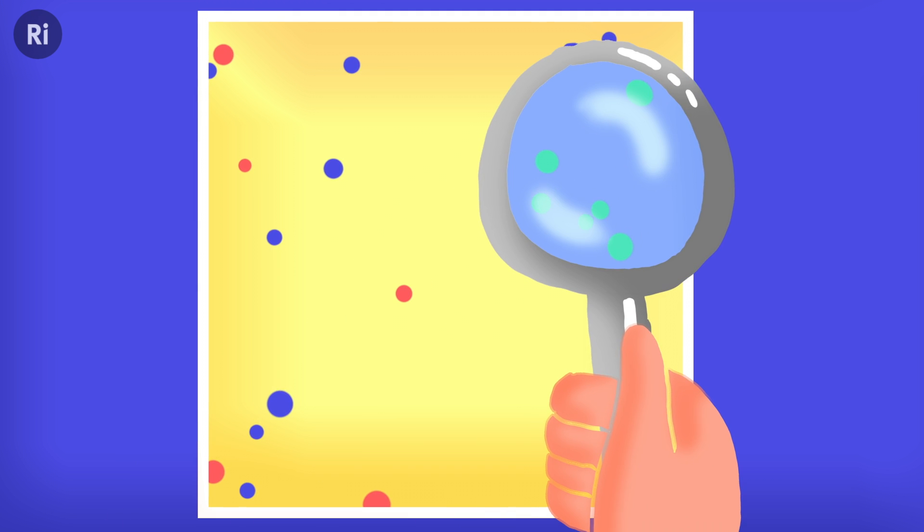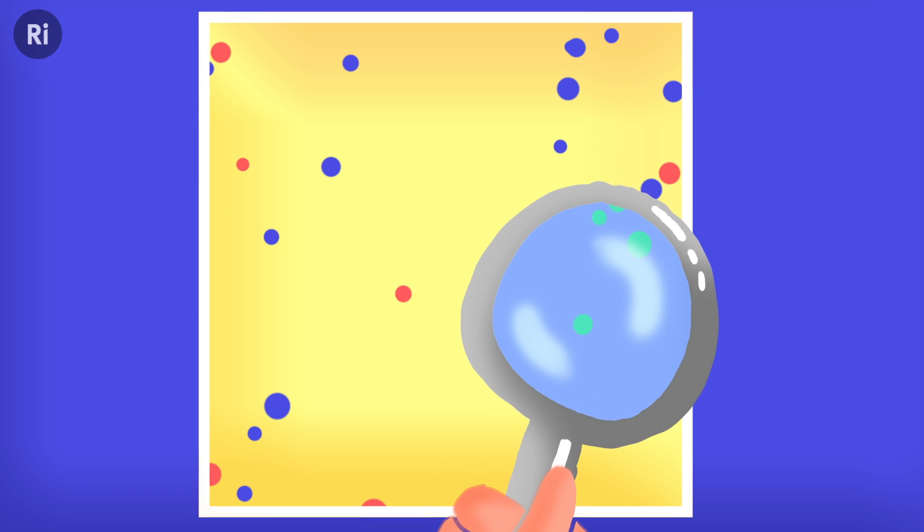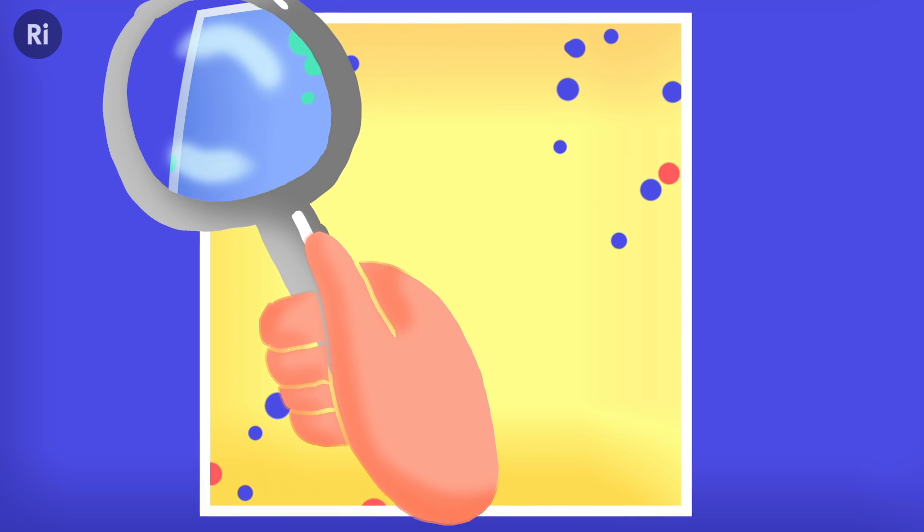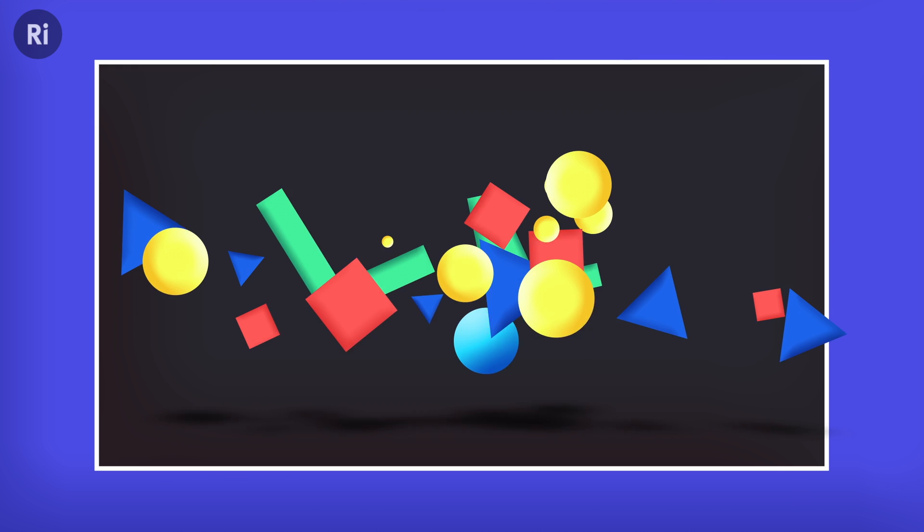Some of those particles we can't detect in the particle detectors. So things like neutrinos, for example, they have almost zero mass, they really don't interact much.